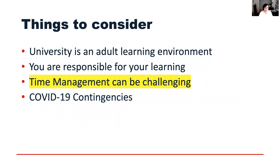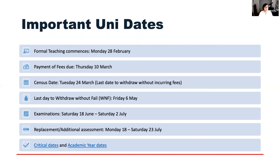Things to consider: time management is so vitally important, particularly in the second half of the semester when all assignments are due, so you have to have a very good plan to manage them all. Important university dates are called critical dates or academic year dates — please check out these two different kinds of dates.